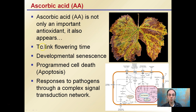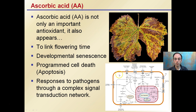Ascorbic acid is not only important as an antioxidant, it also appears to link to flowering time, developmental senescence — the degradation of plants, like leaves dying off in a New England fall — programmed cell death (apoptosis), and responses to pathogens through a complex signal transduction network. This complex network is an example of how one input can cause a whole cascade of events, ultimately leading to gene regulation.